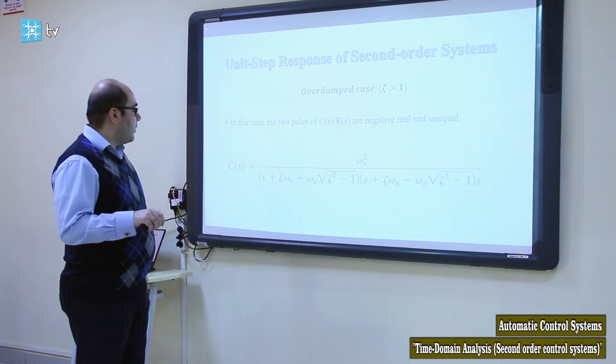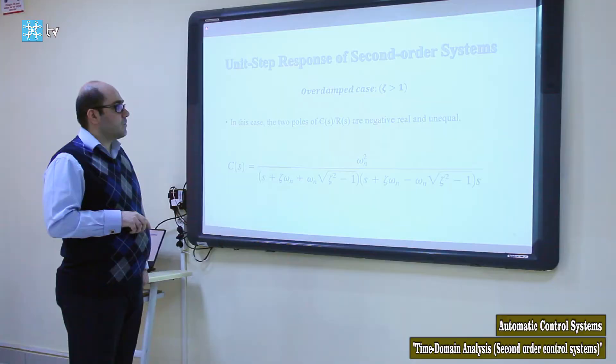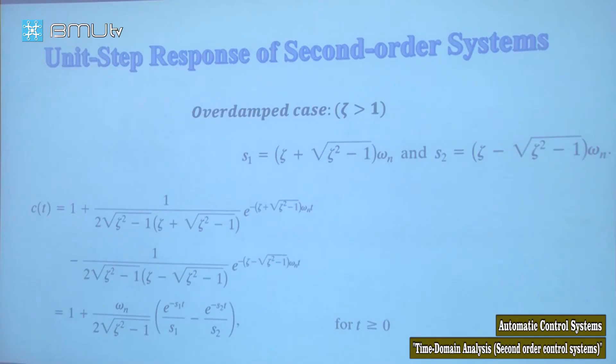The last case is the overdamped case. We multiply the transfer function by the input to find C(s), and taking the inverse Laplace transform gives us c(t) in the overdamped case.